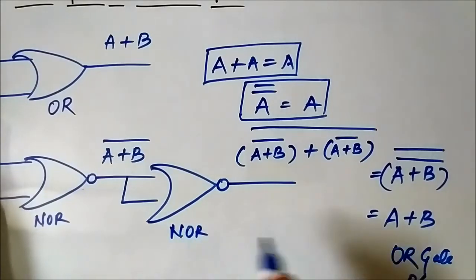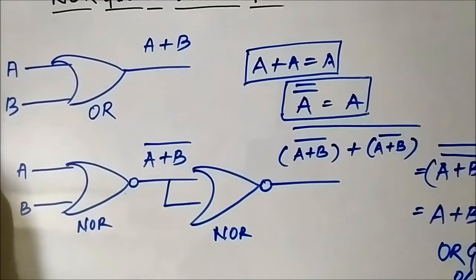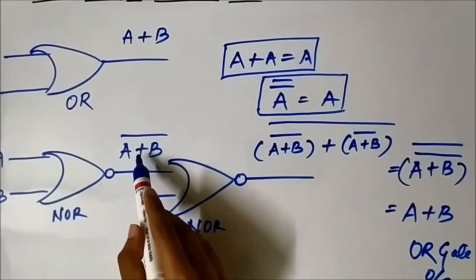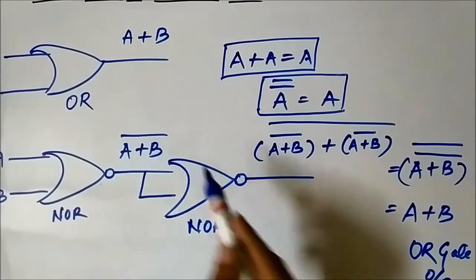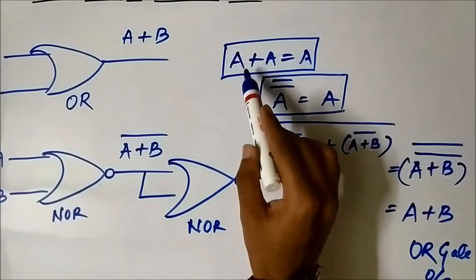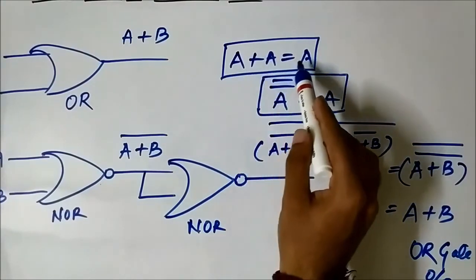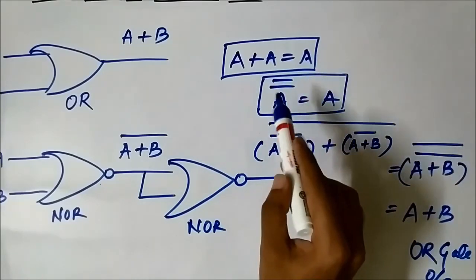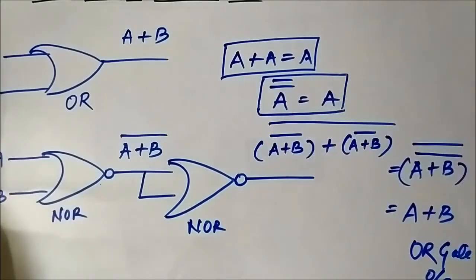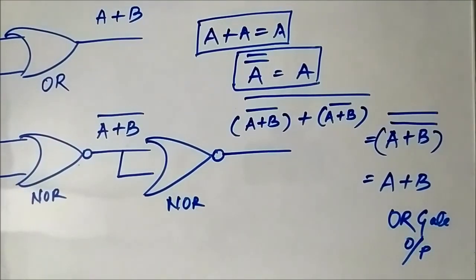The same signals being ORed together gives the same value, so it becomes A OR B whole complement, and then the double complement gives us A OR B - the OR gate output. Using two NOR gates: first NOR gate gives A OR B complement, then a second NOR gate with both inputs shorted gives us the final OR gate output. These two Boolean algebra rules are critical here.